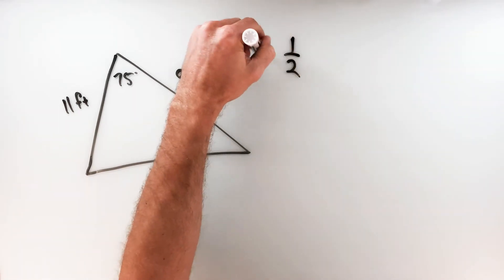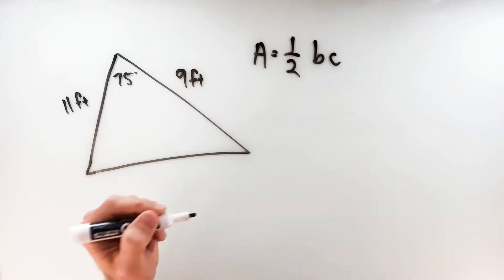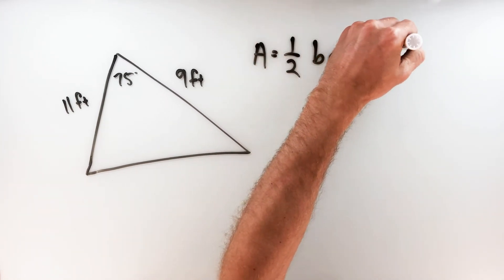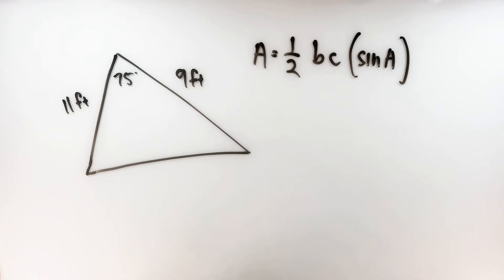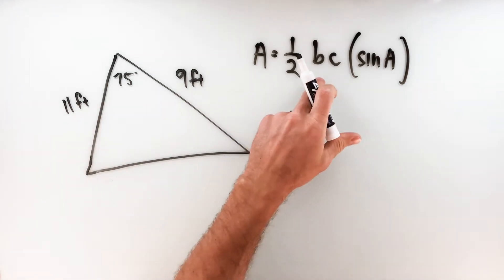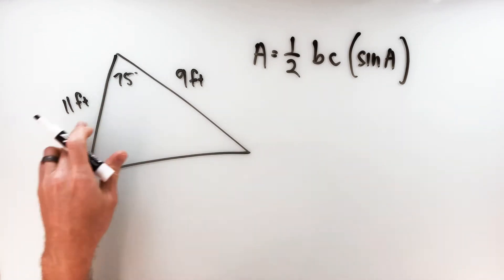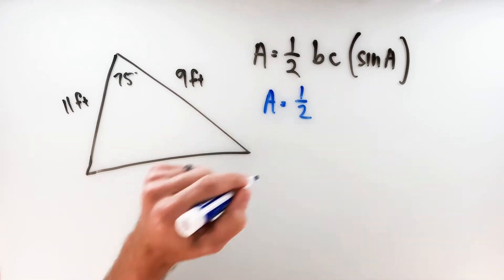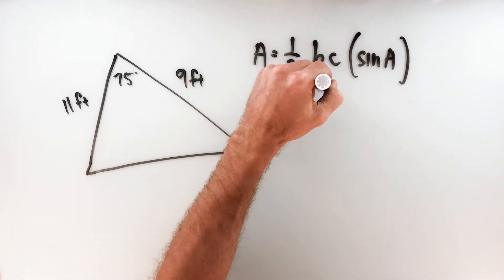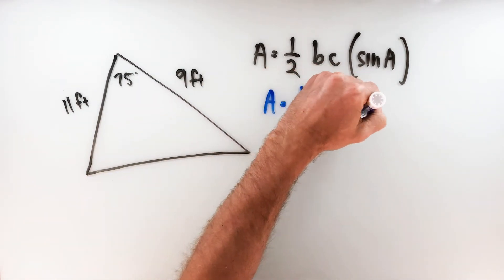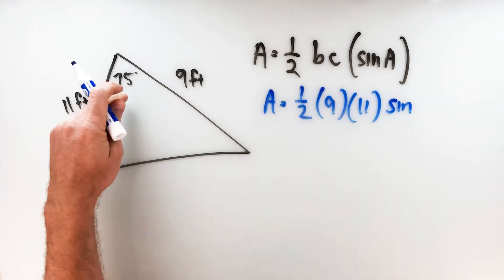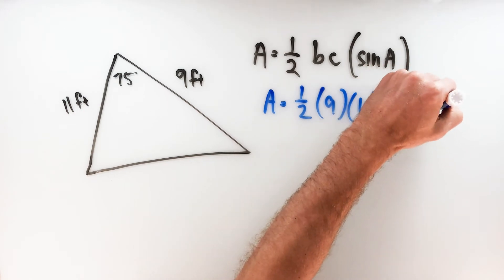Our formula: area is equal to one half BC — B and C are two sides of a triangle — times the sine of angle A, where angle A is the angle in between those two sides. B and C, it doesn't matter which one's which — just the two sides of the triangle. So the area is equal to one half times 9 times 11 times the sine of 75 degrees.